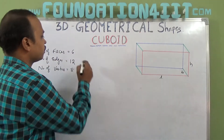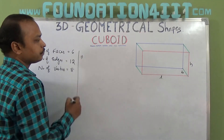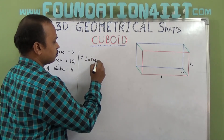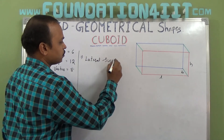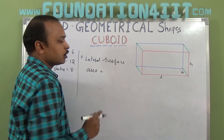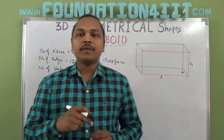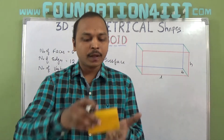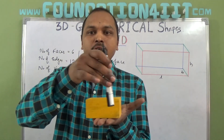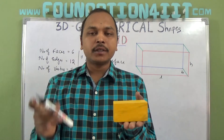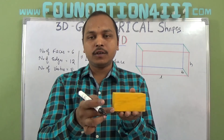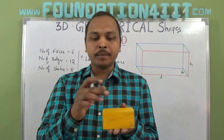Now let's look at the formulas. First, lateral surface area. The lateral surface area is the perimeter of the base multiplied by the height. For any prism, perimeter of the base into height gives the lateral surface area.